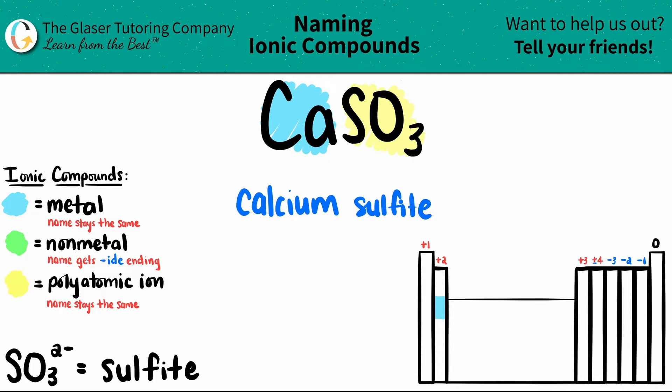And I do not need a Roman numeral because calcium is not a transition metal. So we are done. The name for CaSO3 is calcium sulfite. And that's it.